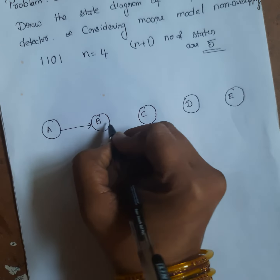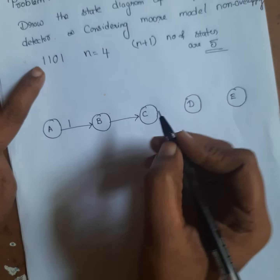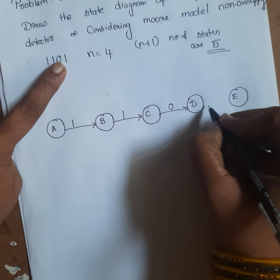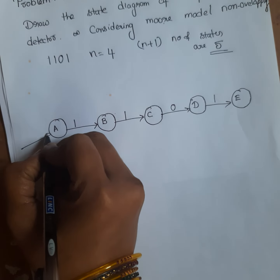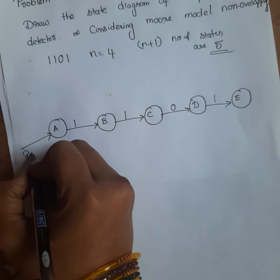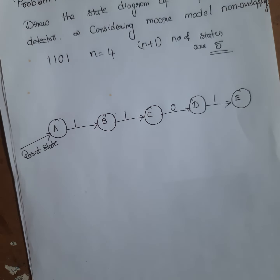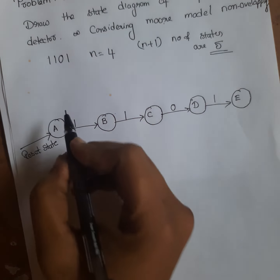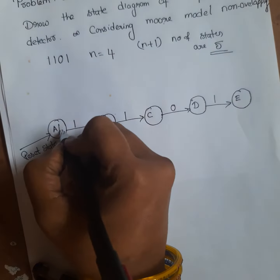Draw the sequence. When the input is 1, it goes to the next state. The sequence is 1, 1, 0, 1. The first state is called the reset state, initial state, or idle state. In the Moore model, the output should be inside the circle. So for the first state, the output is 0.